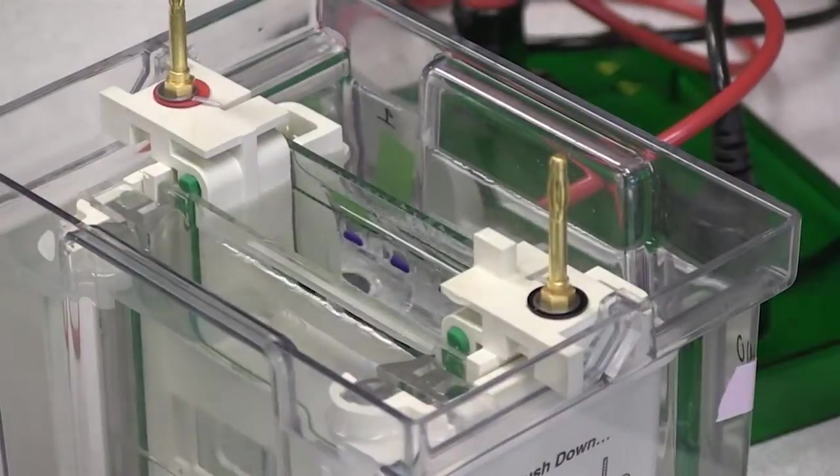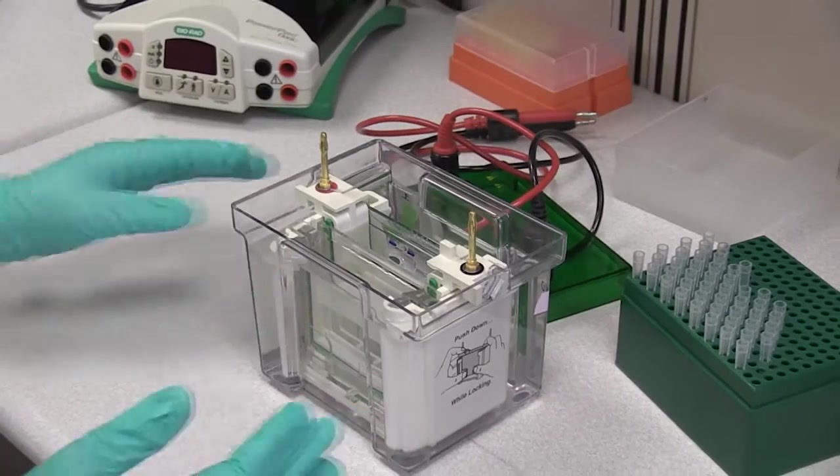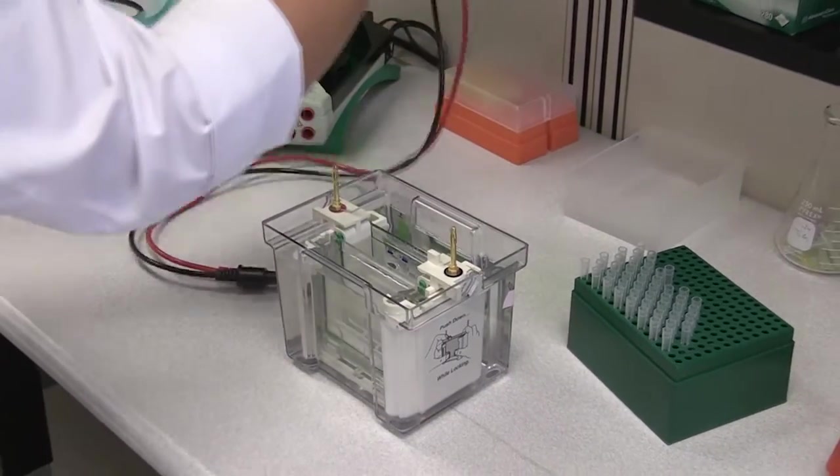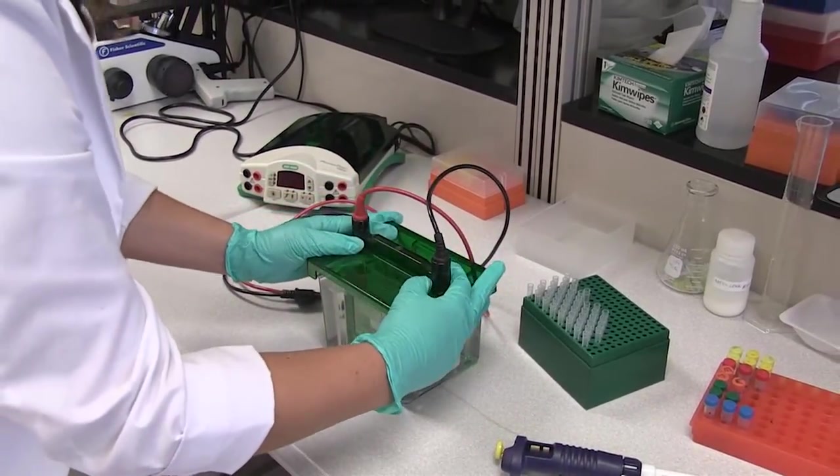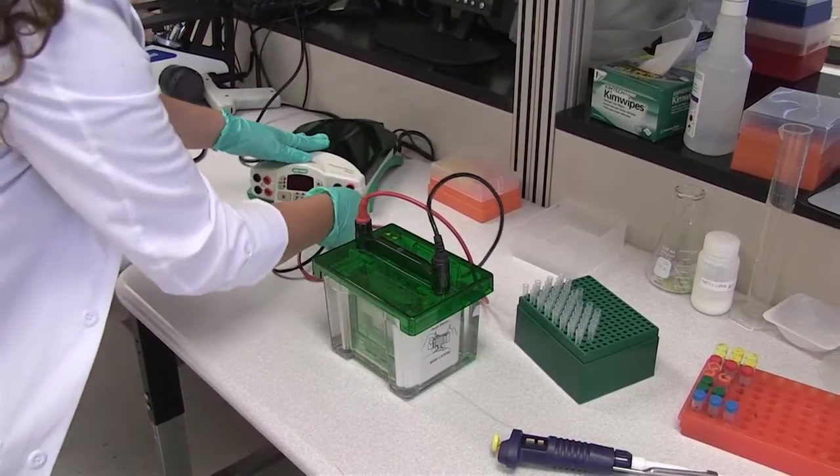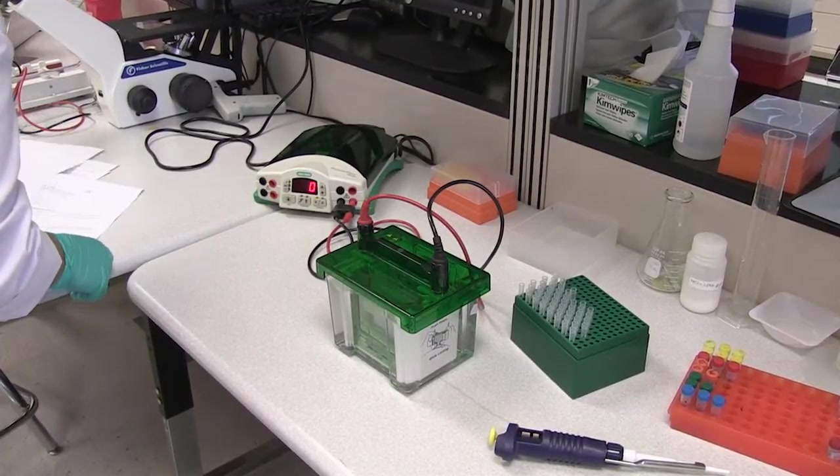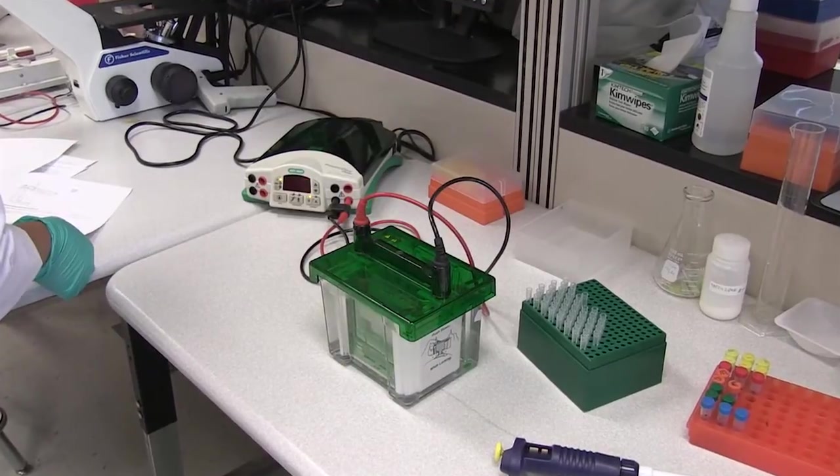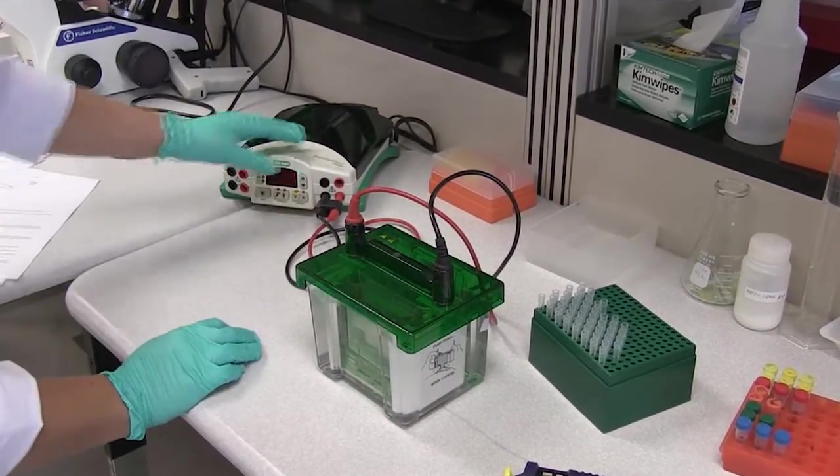All done. We have all three samples loaded. Once again, you don't want to shake and stir this container. You do want to make sure that you keep it still, and that it's close enough to your power supply. Gently put the top on. Hook it up. Turn the machine on. And we are going to run this at 200 volts for approximately 35 minutes.